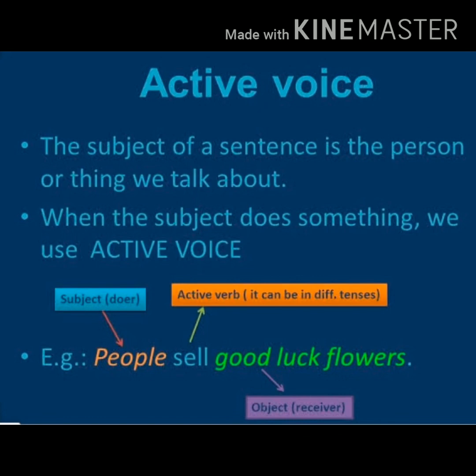Active voice. The subject of a sentence is a person or a thing we talk about. When the subject does something, we use active voice. For example, 'People sell good luck flowers.' Here, 'people' is the subject — the doer. 'Sell' is the active verb, which can differ in different tenses. 'Good luck flowers' is the object. The action is done by the subject.